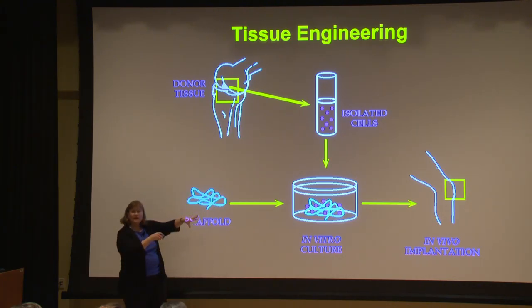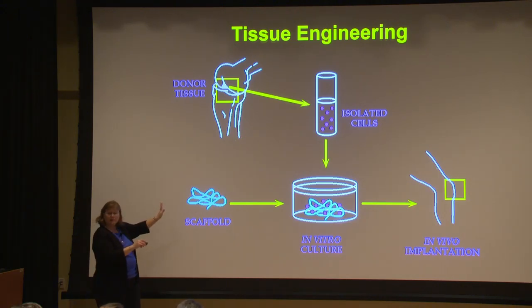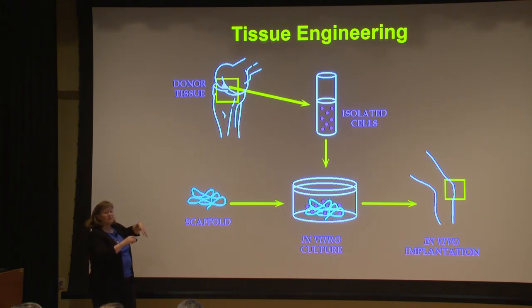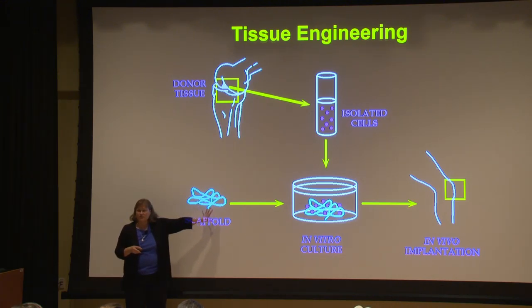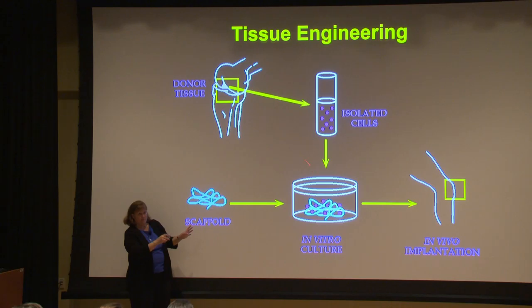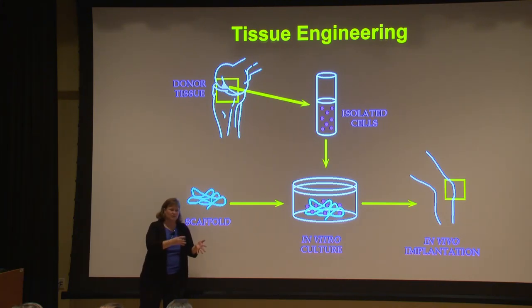Some people are looking at just cell implantation — cell transplantation procedures without a scaffold; there are pros and cons to that. Others are working on just scaffolds without cells. Those scaffolds can be designed to release various drugs or growth factors that trigger your own stem cells to regenerate, so you don't have to worry about an immune response. It's kind of like an internal band-aid that has all the good growth factors and tells the body what to do.